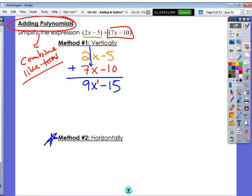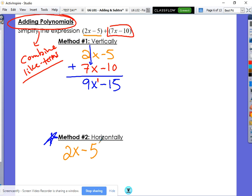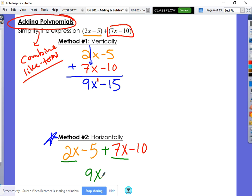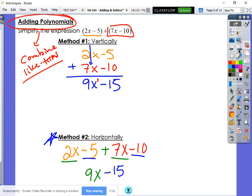Horizontally, it's the same idea. You write them out. 2x minus 5 plus, so plus the 7x minus 10. And at this point, we simply just kind of look for those like terms and say, hey, 2x, 7x, those are like terms. Add them together first because they're the highest exponent. That gives you 9x. And then the negative 5, negative 10, add those together. It gives you negative 15. Very basic. Those are your answers.